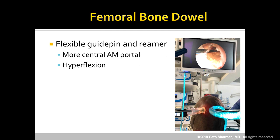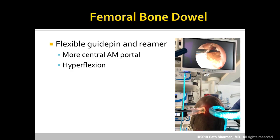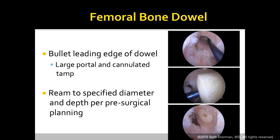Here's a look at the new femoral bone dowel system. It features a flexible guide pin and reamer. Place your portal more centrally to avoid issues with the medial femoral condyle, and consider hyperflexion similar to other anteromedial portal techniques. The large clear cannula system makes this much easier. The dowel goes in over a guide wire in a cannulated fashion, with a nice tamp included in the set. Bullet the leading edge of the dowel, set the large portal cannulated tamp, ream to your specific diameter and depth per your pre-surgical plan, and you can see the final result on the femoral side.